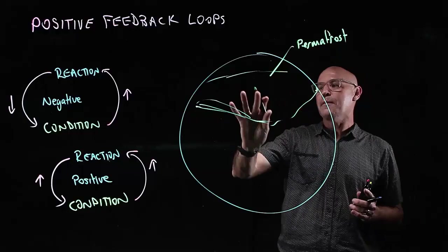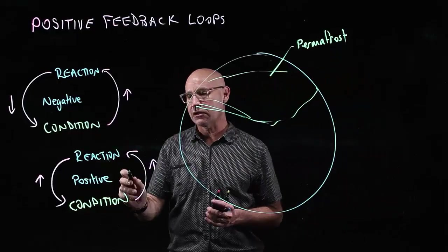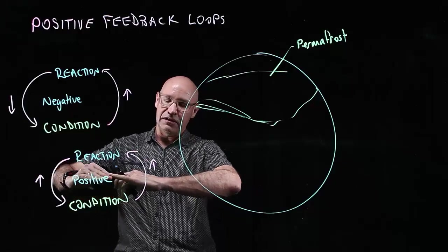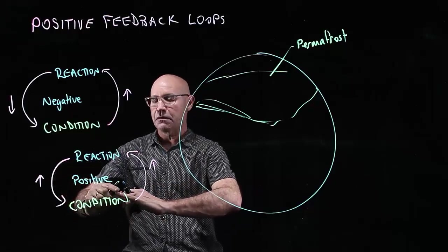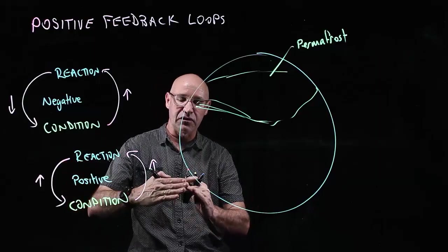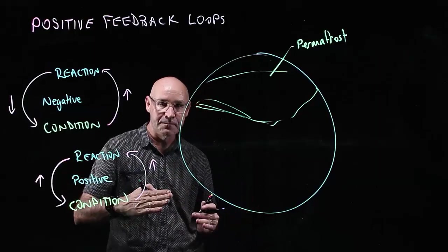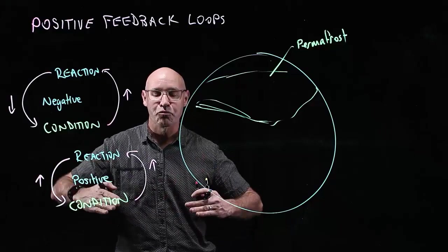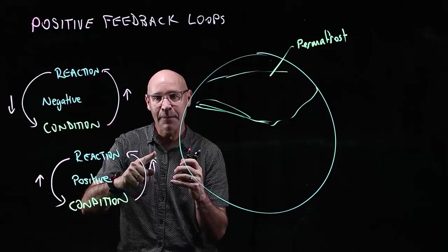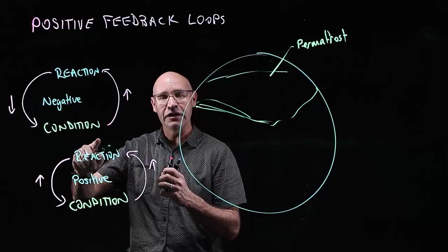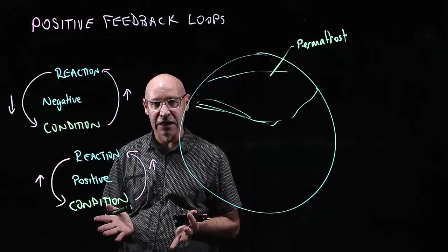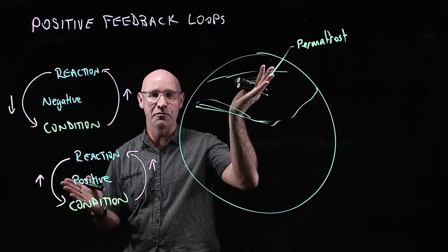It's a positive feedback loop because we've got increasing temperature, we've got defrosting, we've got bacteria decomposing, producing more carbon dioxide. That increased carbon dioxide actually increases the temperature so that more of the permafrost melts.